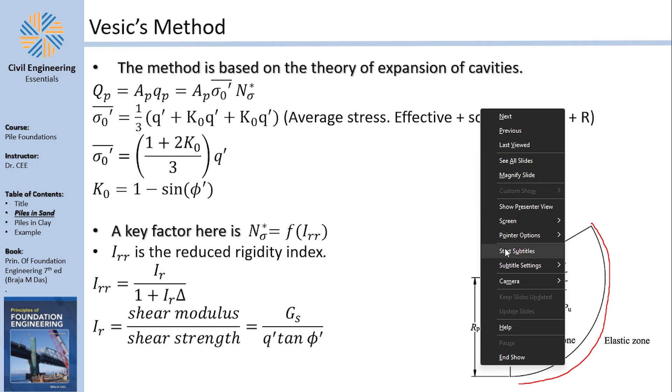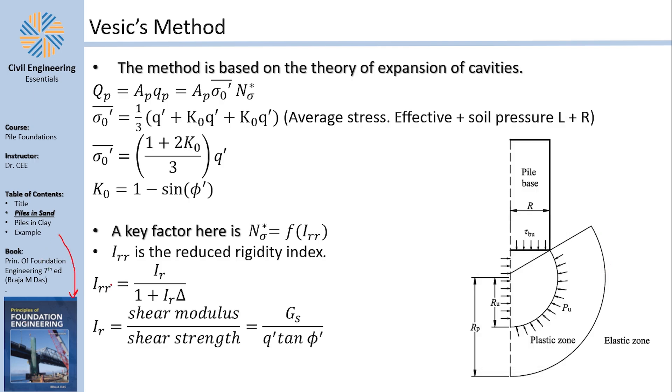Now keep this in mind because the book Roger M Das just tells you here are the equations and I'm trying here not only to give you the equations but I'm trying to give you the rationale behind Vesic's method. Now Vesic in his research on the expansion of cavities noticed that there is a region that affects resistance of the tip the most, which is what he calls a plastic region, and this region is affected by multiple things.